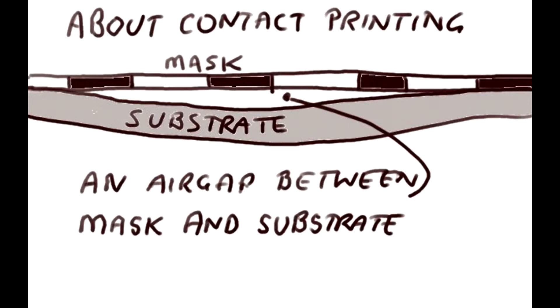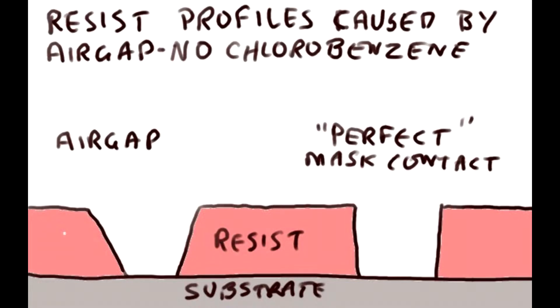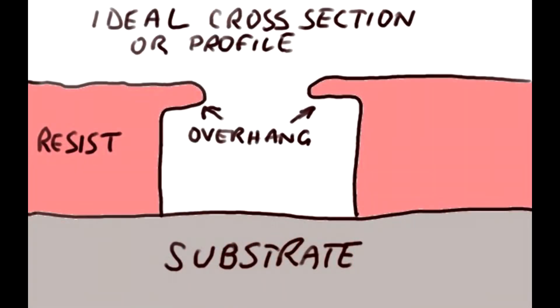So this is contact printing, perhaps with an MA56. On the left is the profile of the resist you're going to get where the air gap is. On the right is the much straighter, more vertical profile that you will get without chlorobenzene where there's very good contact between the mask. With the chlorobenzene process, which as you know will give you an overhang, this will be the ideal profile that you'll get with the resist.